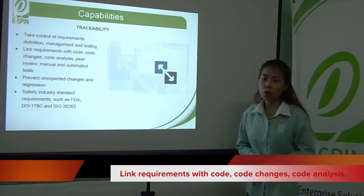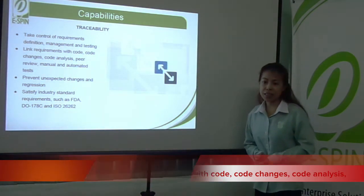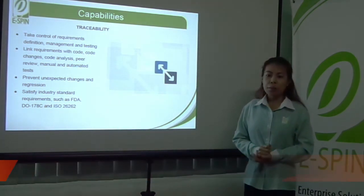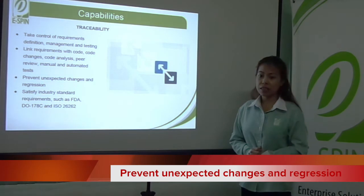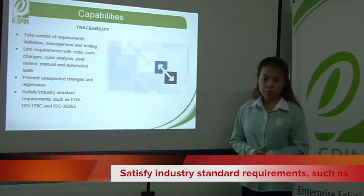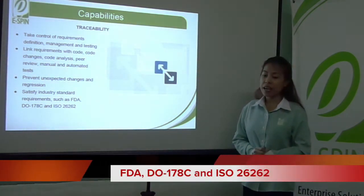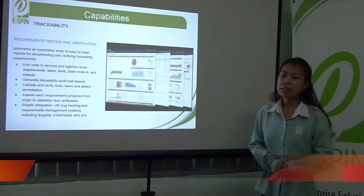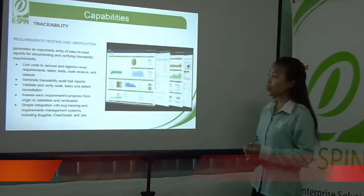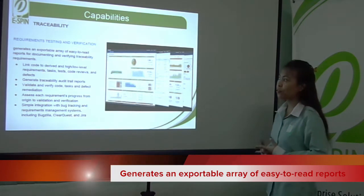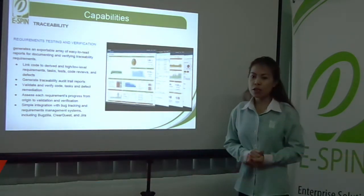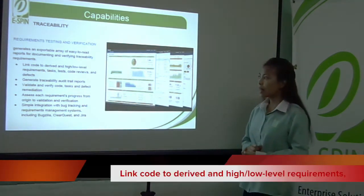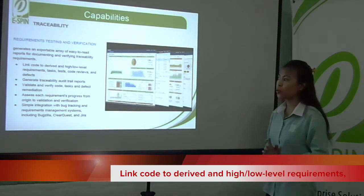Link requirements with both code changes, code analysis, peer review, and manual and automated tests. Prevent unexpected changes in regulation and satisfy industry standard requirements such as FDA, DO-178C, and ISO 26262. Requirements testing and verification generates an exportable array of easy-to-read reports for documenting and verifying traceability requirements, linking code-derived high-level and low-level requirements.